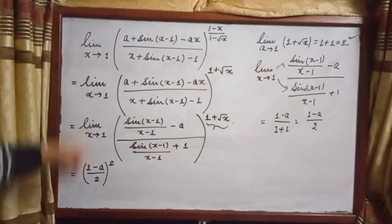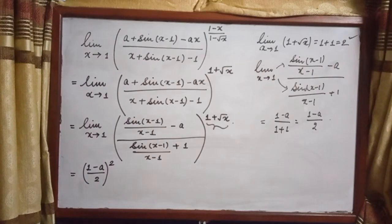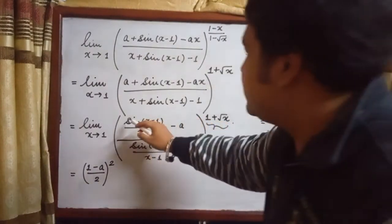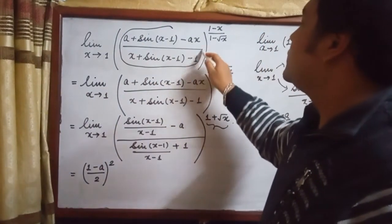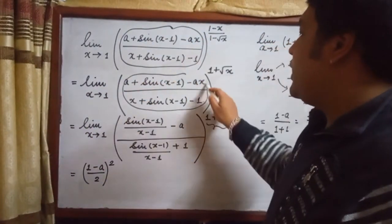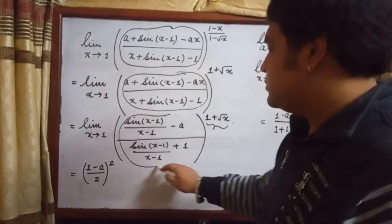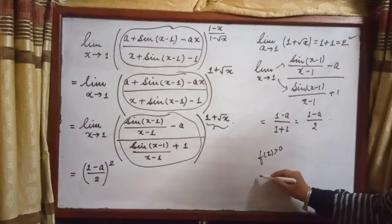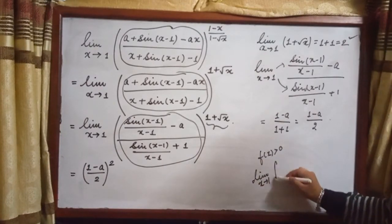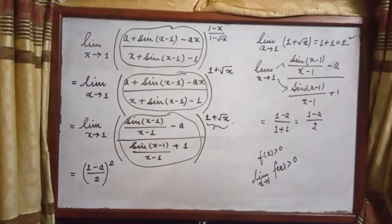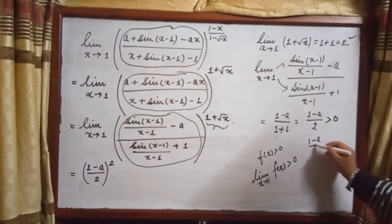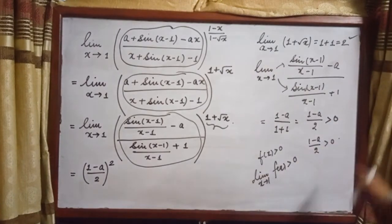So the overall limit equals (1-a)/2 raised to the power 2. But we are working under the assumption that f(x) > 0. Since f(x) is greater than zero, the limit of f(x) as x tends to 1 will also be greater than zero. So (1-a)/2 must be greater than zero — we need to take note of this constraint.